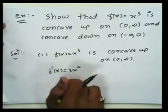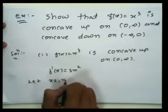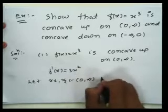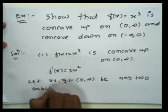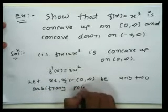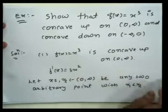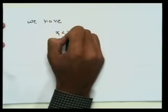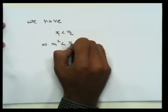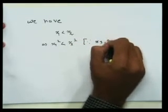Our aim is to prove that 3x² is an increasing function on (0, ∞). Let x₁, x₂ belong to this interval (0, ∞) — any two arbitrary points with the property x₁ < x₂. We will prove that f'(x₁) < f'(x₂). Now, x₁ < x₂ implies x₁² < x₂² because x₁ and x₂ are positive quantities, i.e., x₁, x₂ > 0.